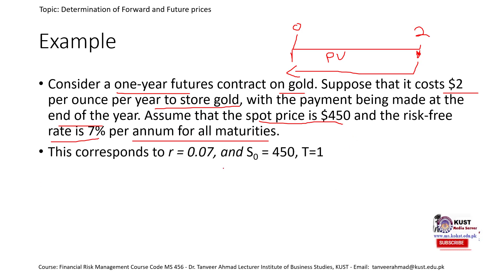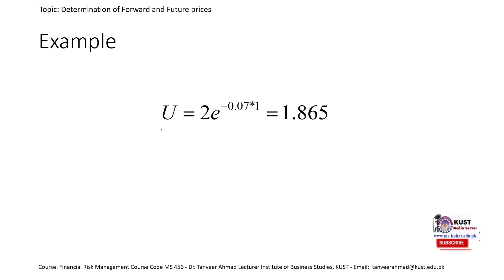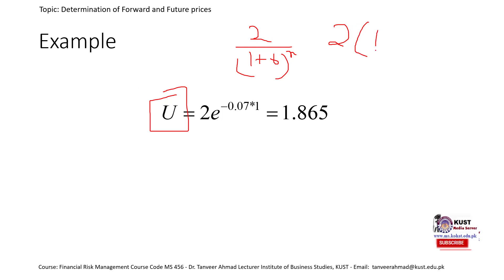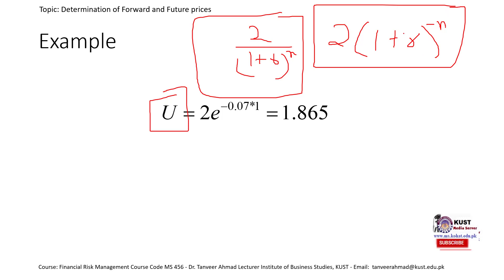The corresponding values are: R = 0.07 (7% converted to decimal), S0 = 450, and T = 1 year. To find the present value of the storage cost, we can use the formula: future value divided by (1 + R) raised to power n, or equivalently, future value times (1 + R) raised to power minus n. Both formulas are correct and give the same answer. This applies when we have annual compounding or compounding at any different frequency.